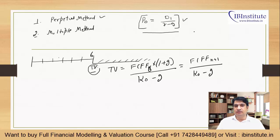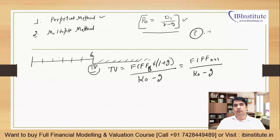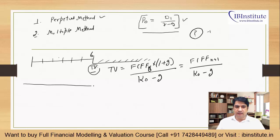The most important and difficult parameter in this formula is G — the growth rate assumption. It is recommended to use the industry's average long-term growth rate. Whatever industry your company operates in, research analysts and industry experts provide estimates of that industry's long-term average growth rate. You incorporate that into your model, and that is how you derive the terminal value using this formula.